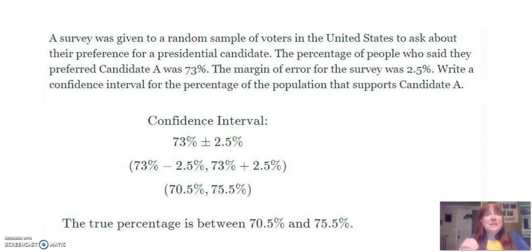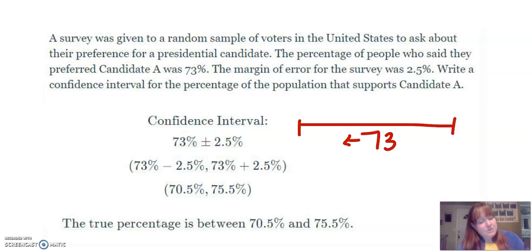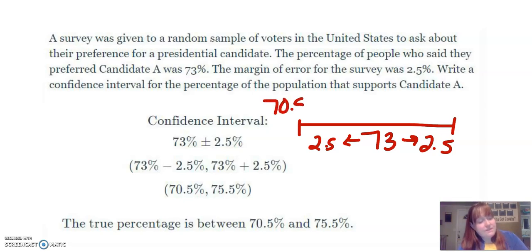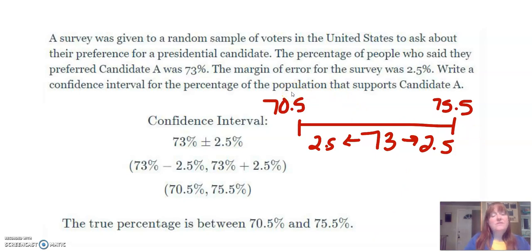So they think candidate A is going to have 73% of the votes, but with a margin of error of 2.5%, our actual population percentage is going to be 2.5% lower or 2.5% higher. So our actual population mean is going to be somewhere between 70.5% and 75.5%. Because our sample was 73%, our actual population mean is very likely between 70.5% and 75.5%, which in this case would still make the candidate win. That's when a margin of error doesn't come back to bite you.